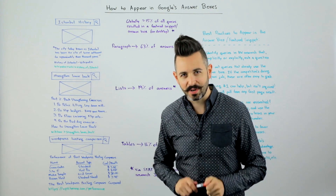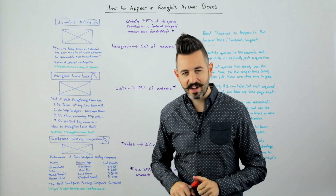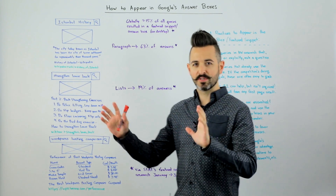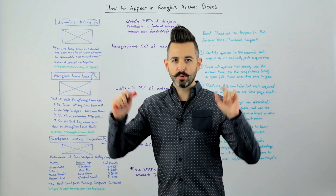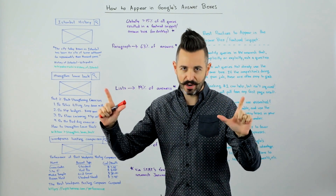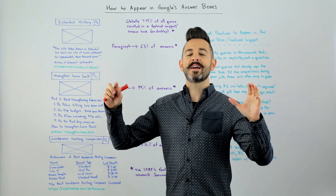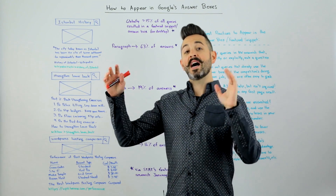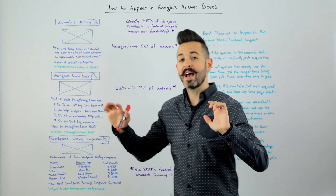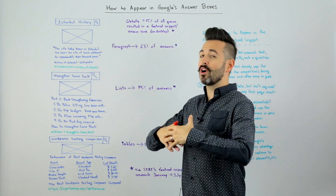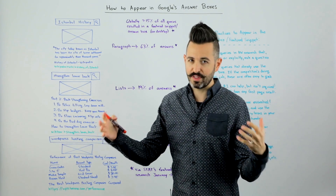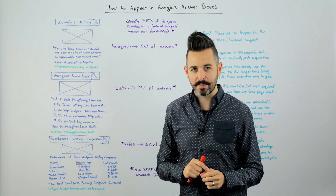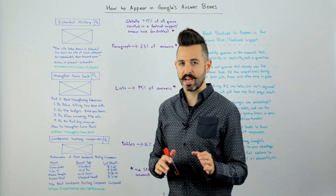Howdy, Moz fans, and welcome to another edition of Whiteboard Friday. This week we're going to chat about answer boxes — those featured snippets that Google puts in ranking position zero, oftentimes above the rest of the organic results, usually below some of the top ads. Sometimes they can draw a ton of the clicks away from the rest of the ten results that would normally appear in Google's organic ranking.